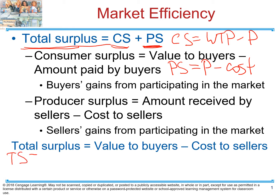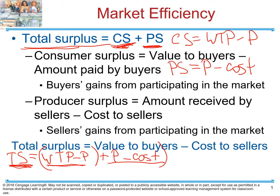Total surplus equals consumer surplus — which is willingness to pay minus the price — plus producer surplus — which is price minus the cost. Notice that price appears as negative in consumer surplus and positive in producer surplus. Without even opening the brackets, you can see that price cancels out. Therefore, total surplus equals willingness to pay minus cost.